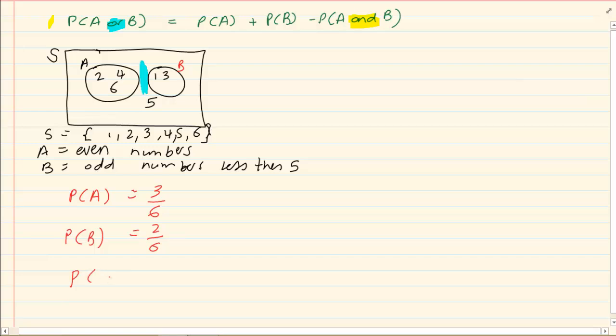My P of A or B. Now remember or means take everything. Whether they overlap or not, you are going to take it. So I am going to take everything in A and I am going to take everything in B. And if you count it, it is 1, 2, 3, 4, 5. So it is 5 over 6.